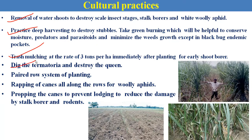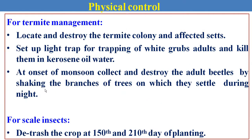Dig the termitoria — a special practice to kill the queen of the termites. Paired row system is used against the sucking pest complex. Wrapping of the canes is used for sugarcane aphids. Propping of the canes reduces infestation of rodents. For physical control, we can dig out or fumigate the termitoria with different fumigants to kill the queen of the termites.